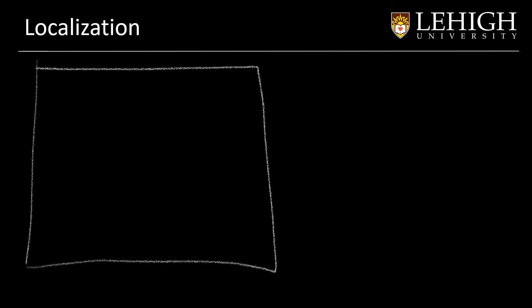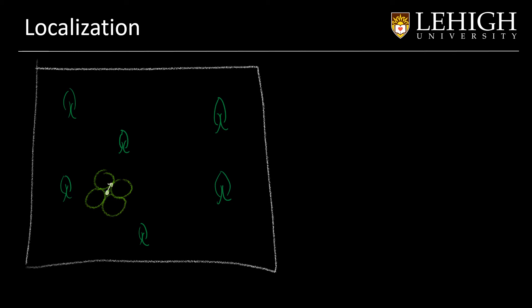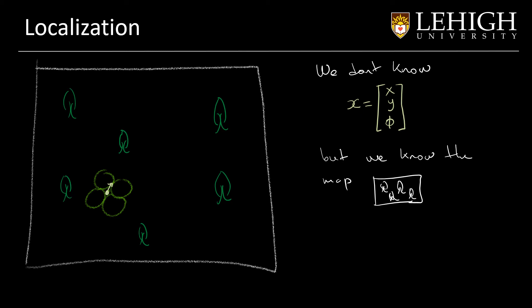We are going to study the localization problem. Let's remember: we have an environment with some landmarks that we will represent as trees in this case, and we have a robot. This robot has a location and an orientation that we will denote by X, and we don't know the location and orientation of the robot — that's the problem we will try to solve. However, we have the map, and we can move the robot and sense the landmarks. We can assume that the robot has a camera and it can detect the landmarks that are in front of it.